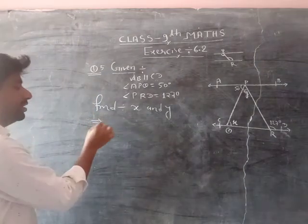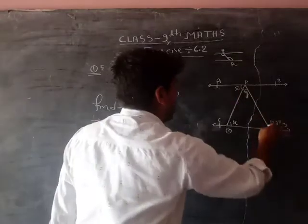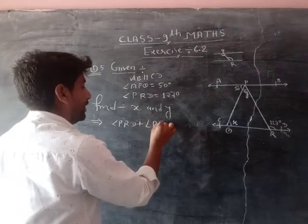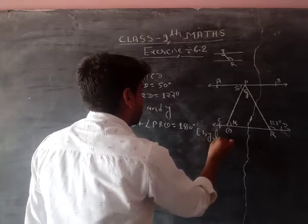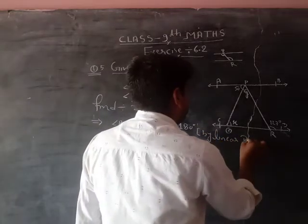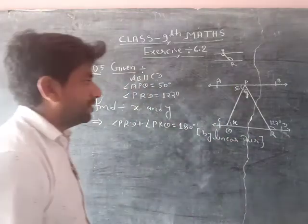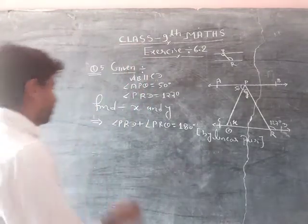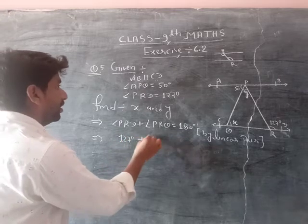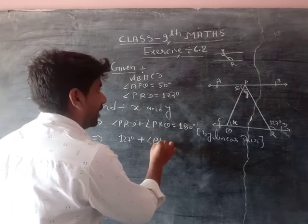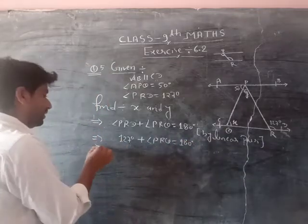In such condition, angle PRD plus angle PRQ equal to 180 degrees. Why? Linear pair. You can also apply exterior angles property. If you see, PRD's value is 127 degrees. Angle PRQ equal to 180 degrees.